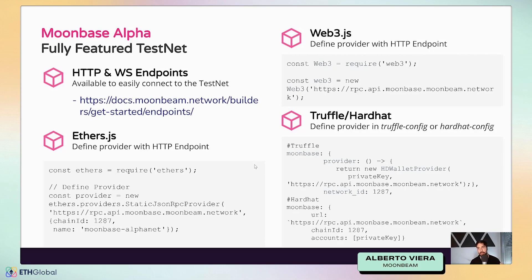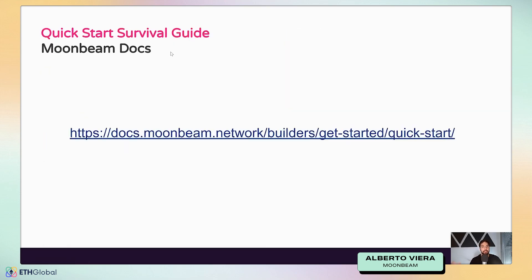If you want to get started with ethers.js or web3.js, it's super simple — just create a provider on ethers with the public endpoint for Moonbase Alpha, or for web3.js create a web3 instance using the Web3 constructor. There are no other requirements; Moonbeam is very Ethereum-compatible. For Truffle and Hardhat, define the provider in the truffle config or hardhat config file as you would with any other network — just provide the endpoint and chain ID and you're ready to go.